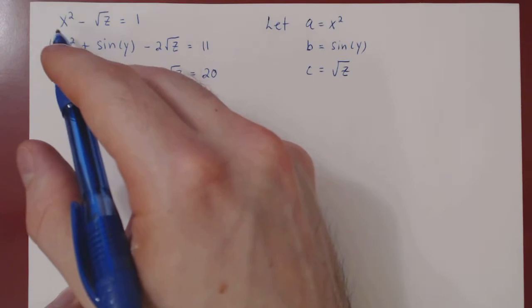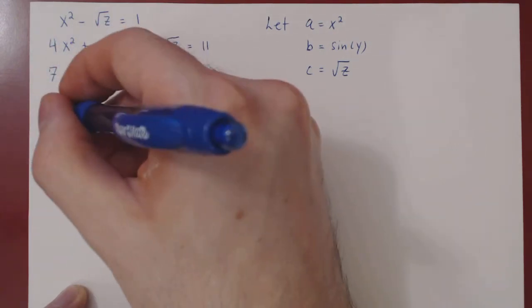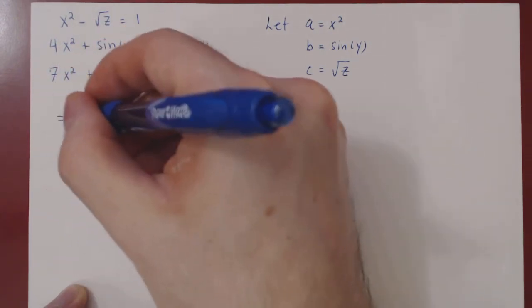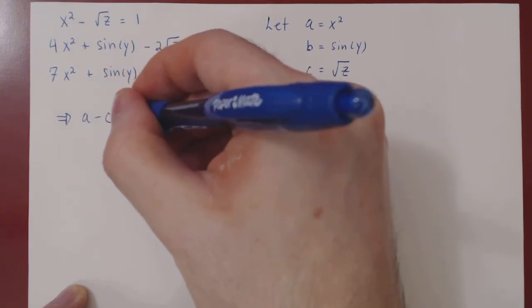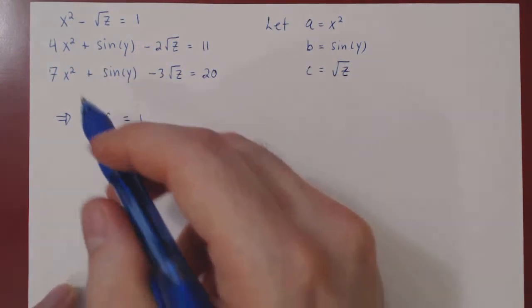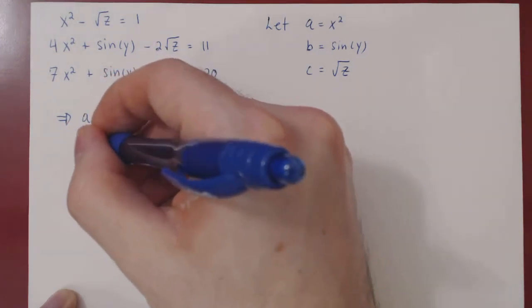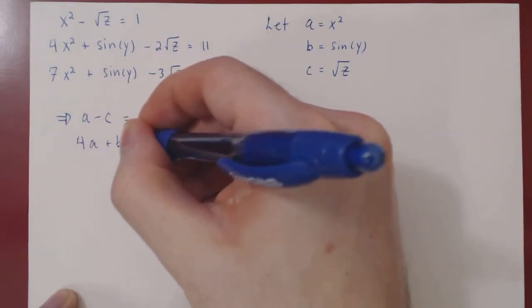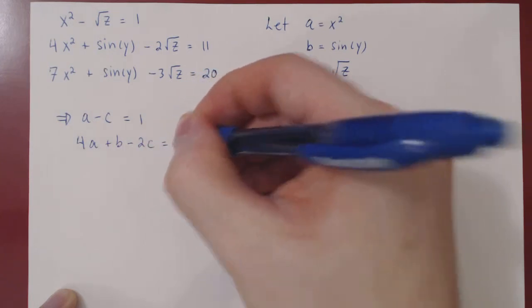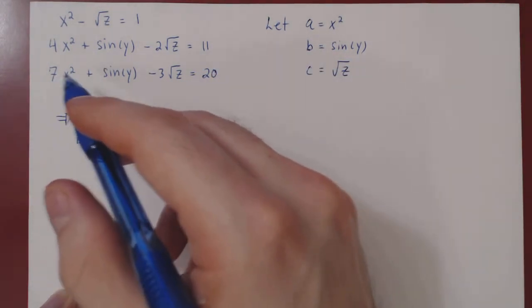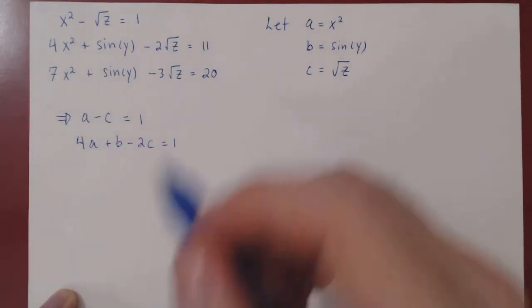Well, the equation becomes a minus c equals 1. The second equation becomes 4a plus b minus 2c equals 11. And the third equation becomes 7a plus b minus 3c equals 20.